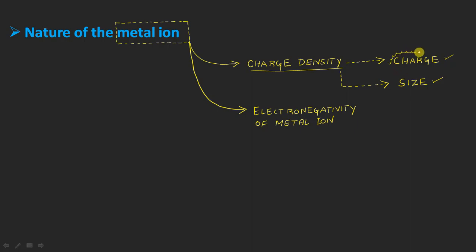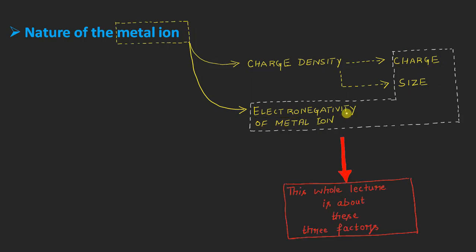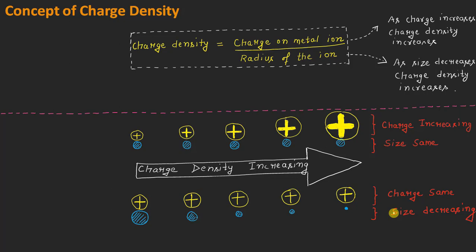Charge density is given by the formula: charge of the metal ion divided by the size of the metal ion. So charge density depends upon both the charge and the size of the metal ion. In total, three points will be covered in this lecture: first, the charge; second, the size of the metal ion; and third, the electronegativity of the metal ion.